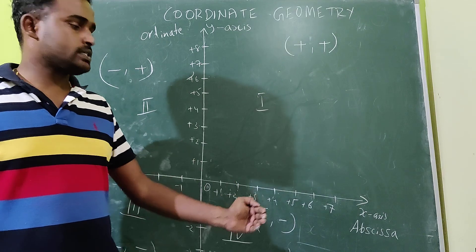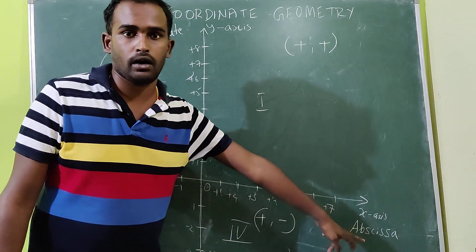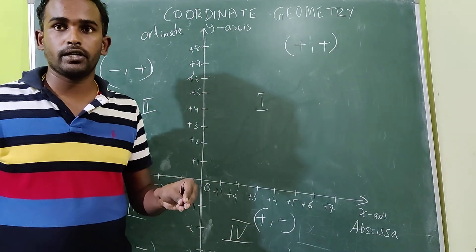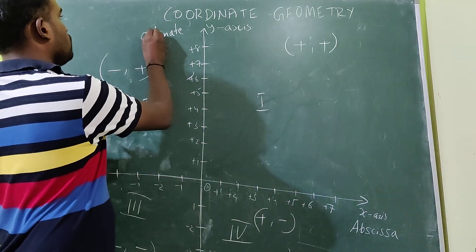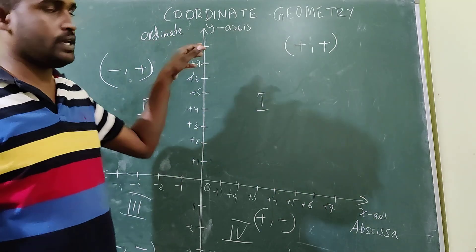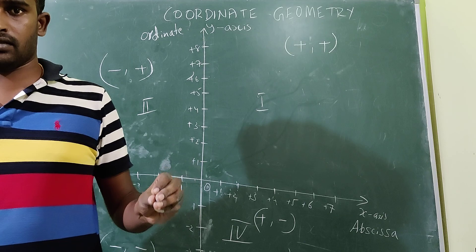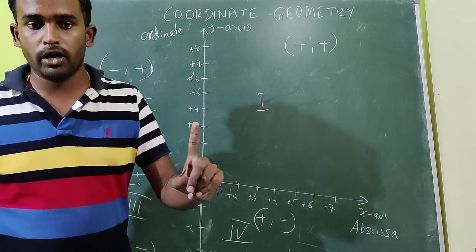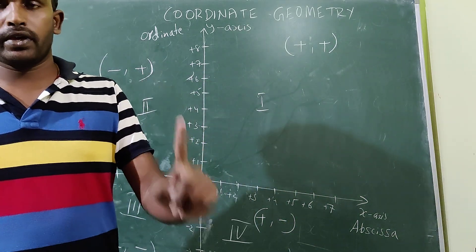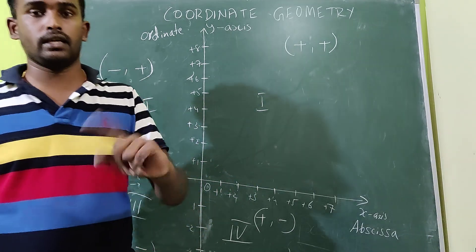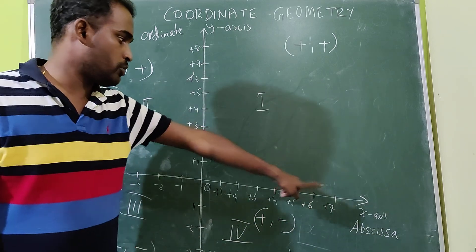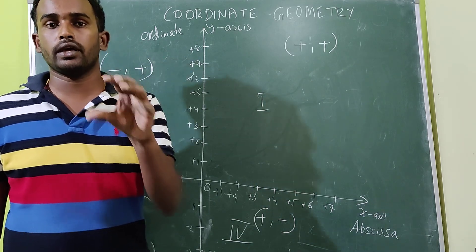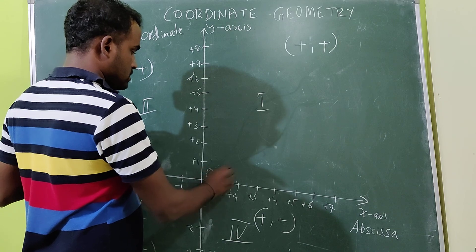The x-axis is also called the abscissa. Abscissa means x-axis. Ordinate means y-axis. They may ask: name the point where the abscissa and ordinate intersect each other. The point of intersection of x-axis and y-axis is called the origin. The coordinates of the origin are (0, 0).